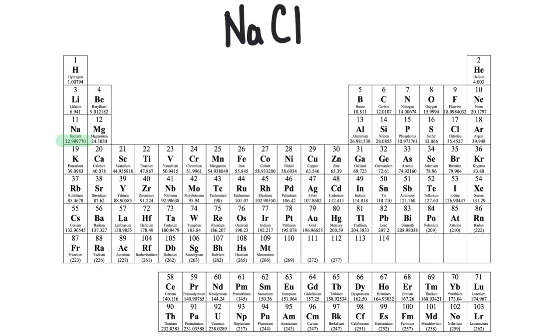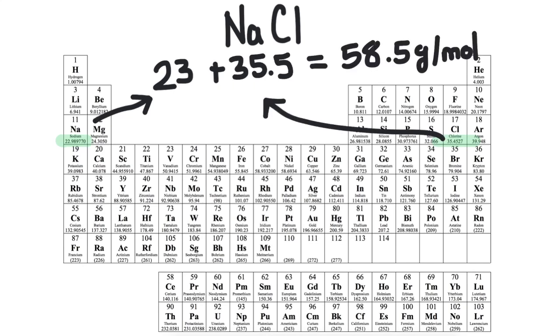There's one sodium and one chloride in the compound. So we will find the molar mass of each element and then add them together. Sodium has a molar mass of 23, and chloride has a molar mass of 35.5. It's generally not necessary to use all the decimal places that are listed on the periodic table. I usually just round up to one decimal place. Now we'll add them together and we get 58.5 grams per mole.